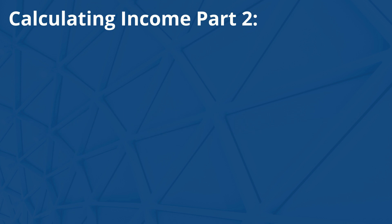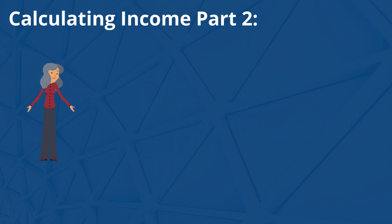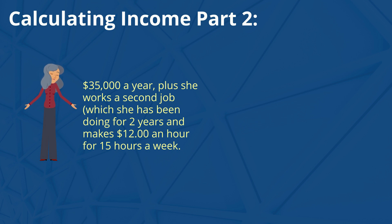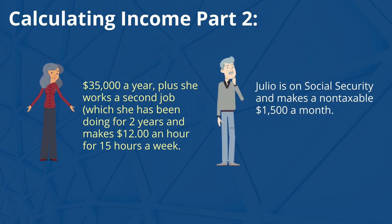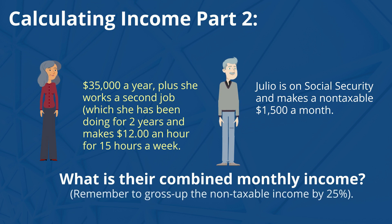Let's look at one last example. Savannah and Julio are looking to refinance their home. Savannah makes $35,000 a year, plus she works a second job, which she has been doing for two years, and makes $12 an hour for 15 hours a week. Julio is on Social Security and makes a non-taxable $1,500 a month. What is their combined monthly income? Remember to gross up the non-taxable income by 25%.